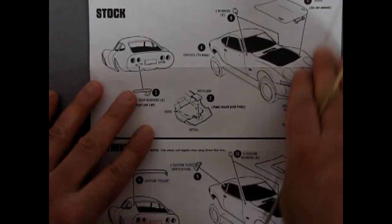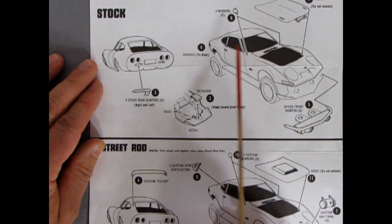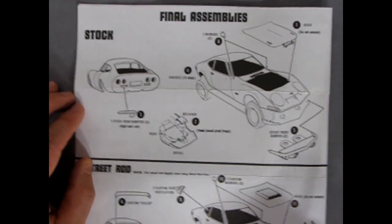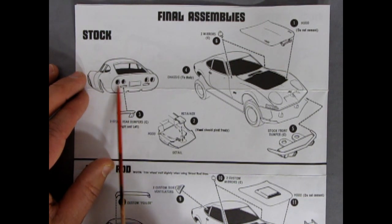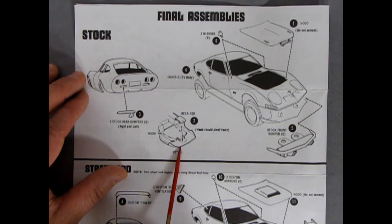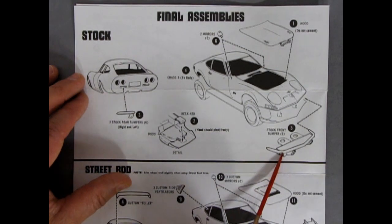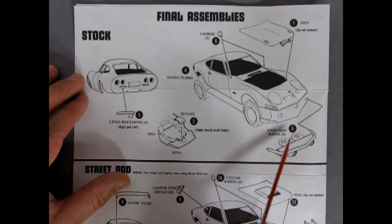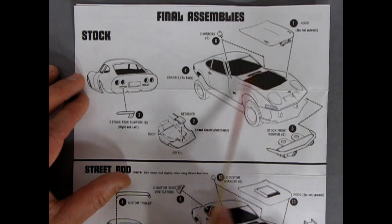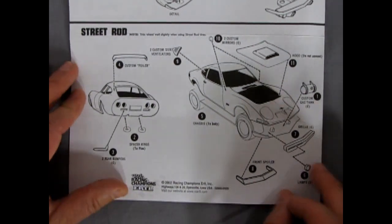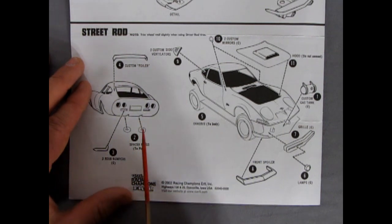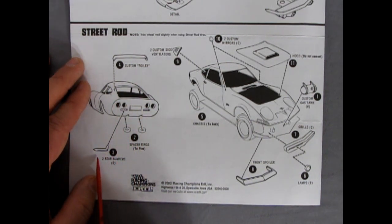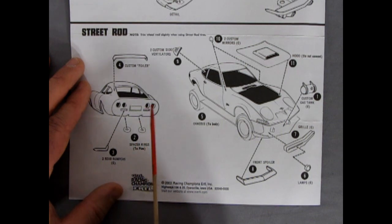And then finally you've got your stock final assemblies right there. So then we have our body with the Corvette style rear bumperettes going on there. And then there is a retainer for the hood because it had that hinge in the front. The stock bumpers have the little pins sort of like a promotional style. There's that hood going in there and then your side mirrors and it all goes together nice. And then when you get your street rod you have this custom foiler which goes up over top of the rear window or along the rear window.